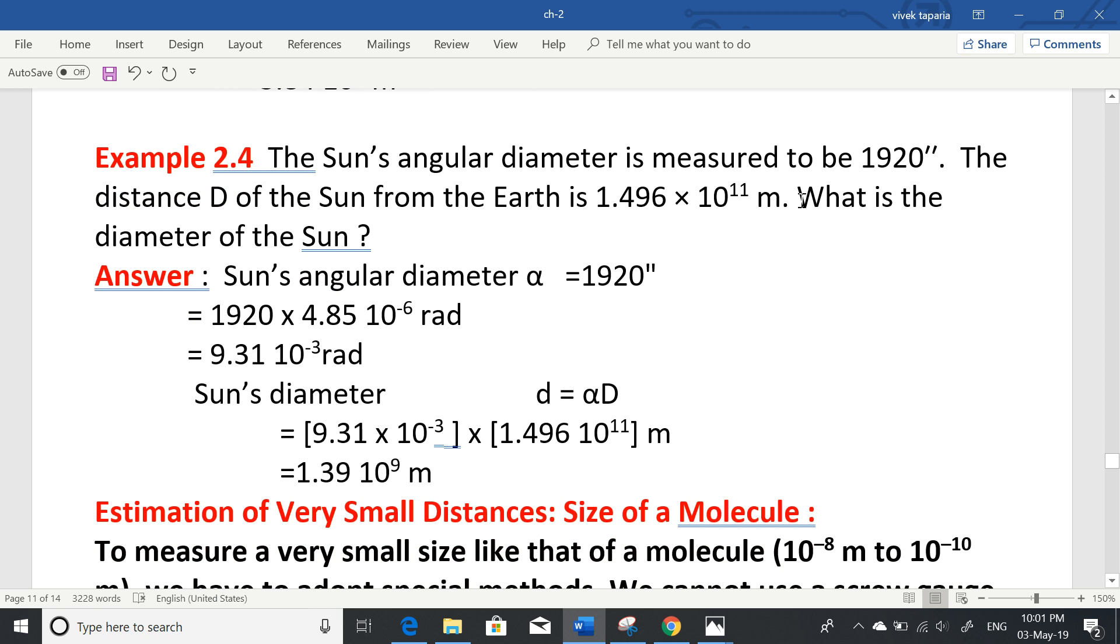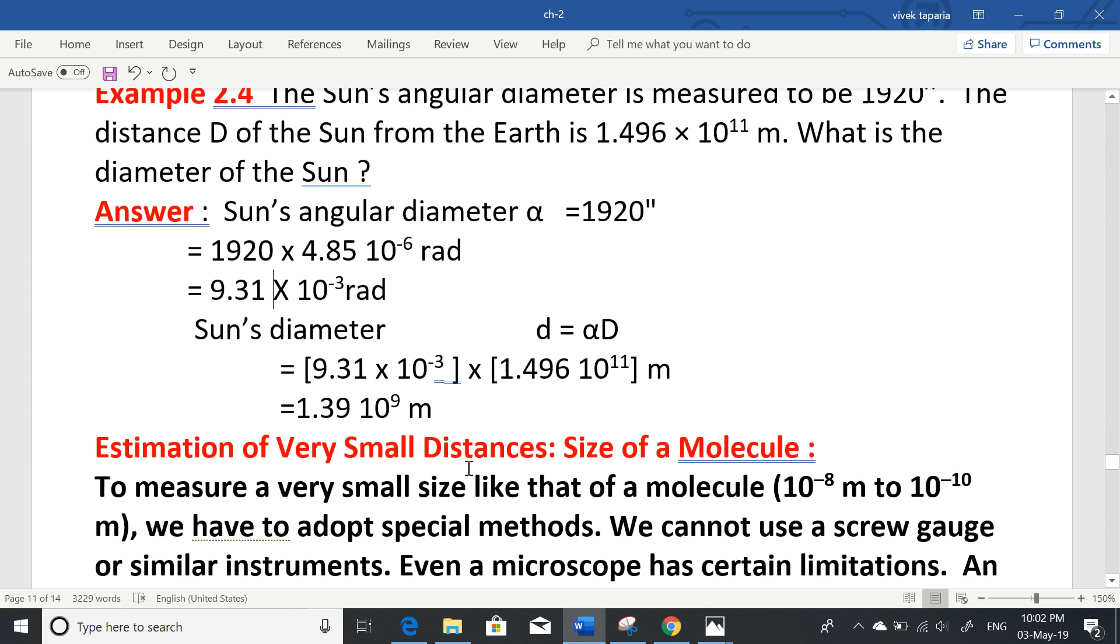Example 2.4: The sun's angular diameter is measured to be 1920 arc seconds. The distance D of the sun from earth is 1.496 × 10^11 meters, which is called one astronomical unit. We can verify this knowing light speed is 3 × 10^8 meters per second and light takes 8 minutes 20 seconds or 500 seconds to reach earth, giving distance equals speed times time. To find the sun's diameter, we first convert 1920 arc seconds to radians, getting 9.31 × 10^-3 radians. Then the sun's diameter d equals alpha times D, giving 1.39 × 10^9 meters, which is extremely large.